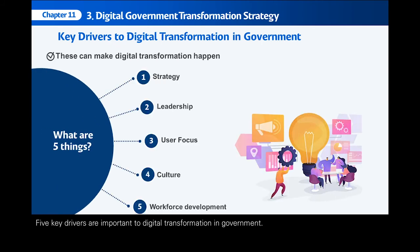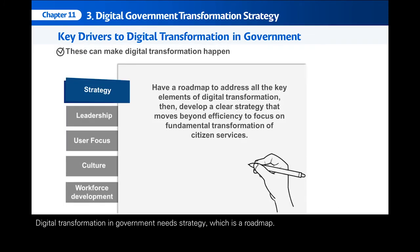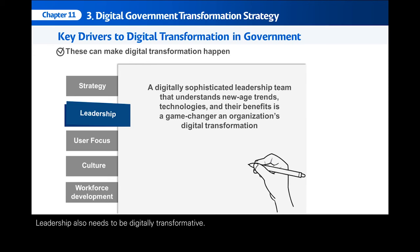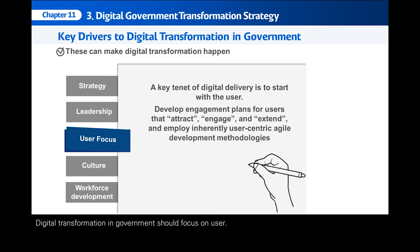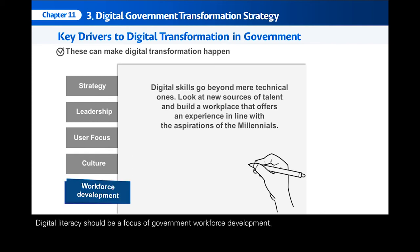Five key drivers are important to digital transformation in government. First, digital transformation needs a strategy — a roadmap that addresses all elements for fundamental transformation of services to citizens. Second, leadership needs to be digitally transformative, with leadership teams understanding new trends and technological potentials. Third, digital transformation in government should focus on the user, as a user-centric approach is critical to agile government. Fourth, government culture needs to change toward a transformative culture, following digital trends, with inclination toward risk-taking, digital collaboration, and digital-based innovation. Fifth, digital literacy should be a focus of government workforce development, with people sharing experience and aspirations from digital transformation.